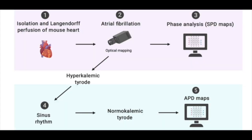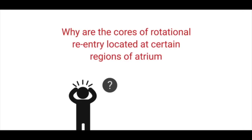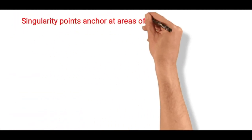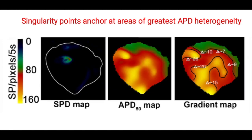To elucidate the underlying electrophysiological substrate, the Langendorff-perfused hearts were perfused with a hyperkalemic solution to terminate the arrhythmias and render them into normal sinus rhythm. Thereafter, a normokalemic solution was infused, and the atrial action potential duration was measured by pacing the atria at 10 hertz. The heterogeneity of the action potential duration was assessed by the difference between the greatest and the least action potential duration within a certain area. The question that arises is: why are the cores of rotational reentry and wave breaks anchored in specific regions of the atria? The core of the rotational reentry is known as the singularity point, and areas of recurrence of wave breaks were also quantified over time using a singularity point density map during atrial fibrillation.